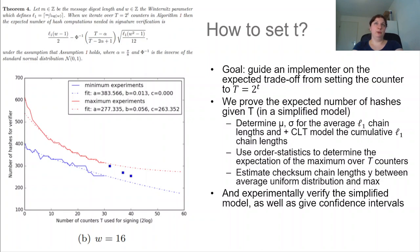Then on a performance analysis level, so given that the signature generation and verification scheme for an implementer, it might be a question on how to set T and what kind of performance can we expect them. And we do this in two ways in the paper. The first way is that we, in a simplified model, prove the number of hashes an implementer can expect for a given set T.